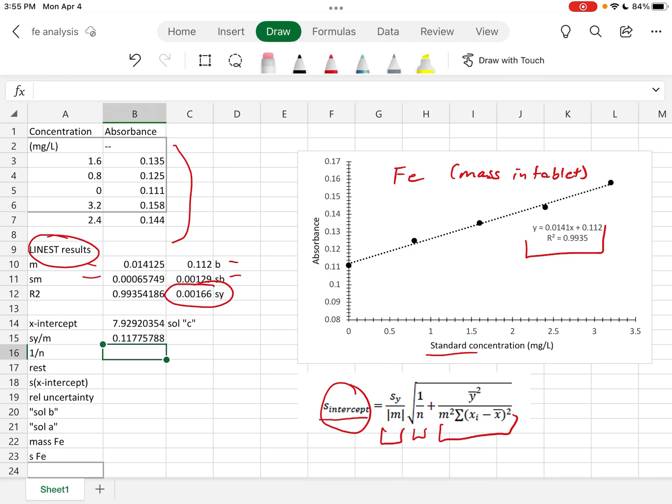Next we need 1 over n, which is the number of samples that are in the analysis. I count 5 spots so I'm just going to type in 1 over 5 for this just to keep it simple. And the rest of that needs to be calculated.